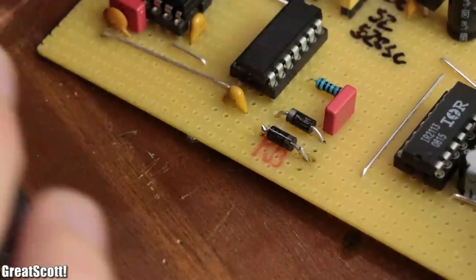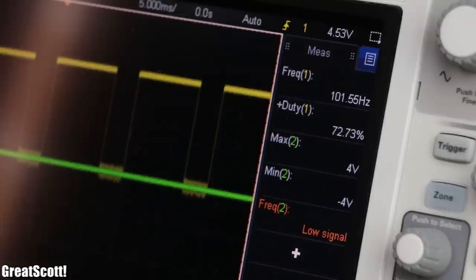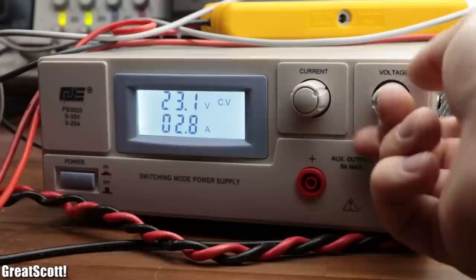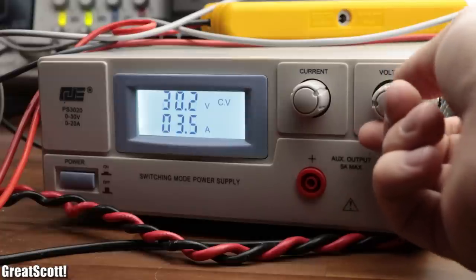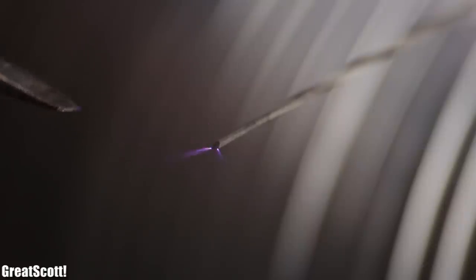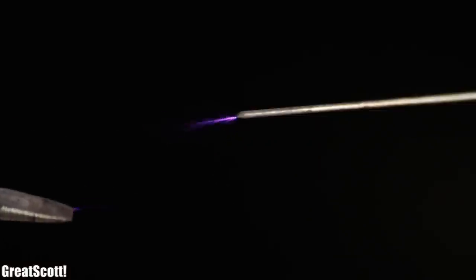All we can do for now is setting the duty cycle to 75%, cranking up the input voltage to 30 volts, and have fun with the so far untuned solid state Tesla coil arcs, which are already pretty scary.